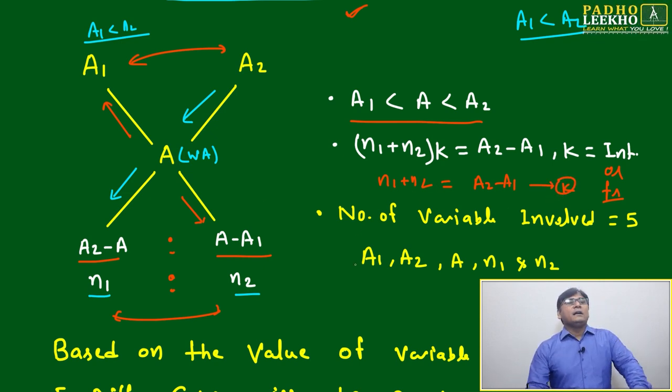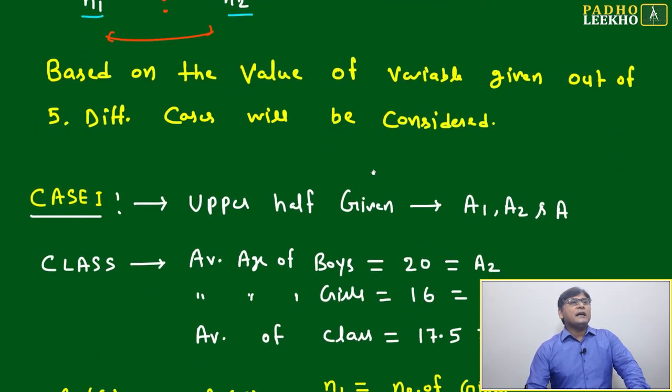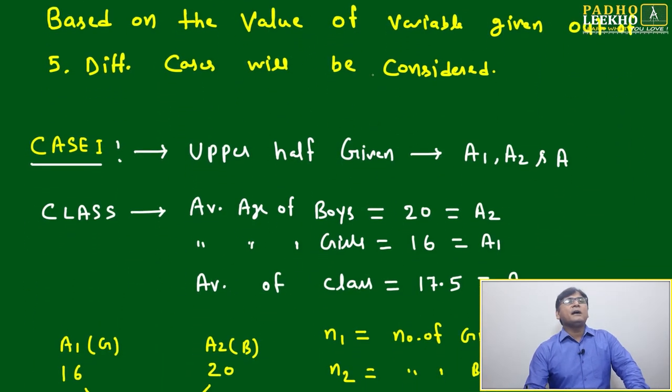Now, the number of variables involved are five. Five variables we are dealing with here: A1, A2, A, n1, and n2.